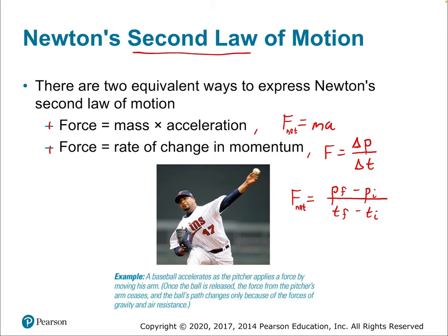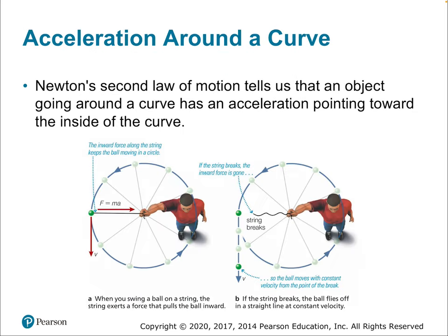That is Newton's second law. If you want a name for it, like we gave to the first law, you'd call it the law of acceleration — because what it really does is define the relationship between force and acceleration. Now, let's remind ourselves that acceleration around a curve is still acceleration. Newton's second law tells us that an object going around a curve has an acceleration pointing towards the inside of the curve. You can't turn without a net force. And if that force is removed, the object will stop turning and continue in a straight line in the direction it had at the moment the force was removed.